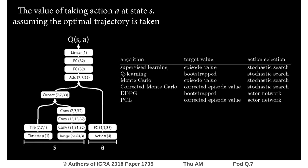We train the robot from this offline data using six value-based RL algorithms: a supervised baseline, deep Q-learning, DDPG, Monte Carlo, a modified variant of Monte Carlo that corrects for its off-policy bias, and path consistency learning.